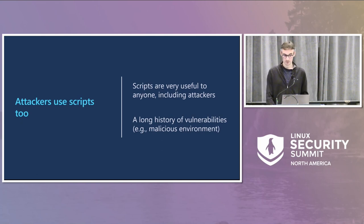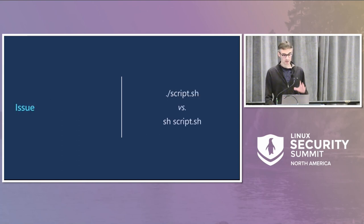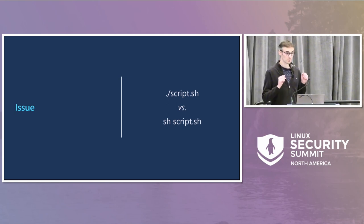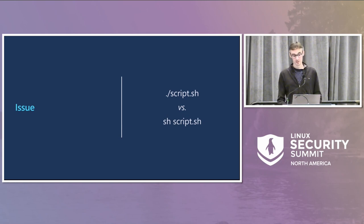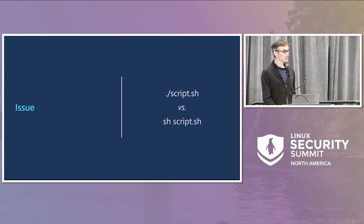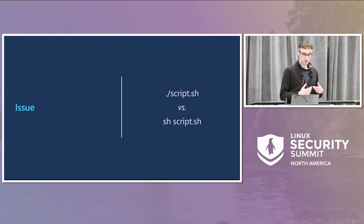For instance, you cannot trust at all the environment variables, and so on. So it might be a risk to execute untrusted scripts. The issue is summarized here: there are two ways to execute scripts — either to ask the kernel to execute a path, like dot-slash-script.sh, or to ask the script interpreter to execute the script. From the user point of view it's the same, but from the kernel point of view it is not.